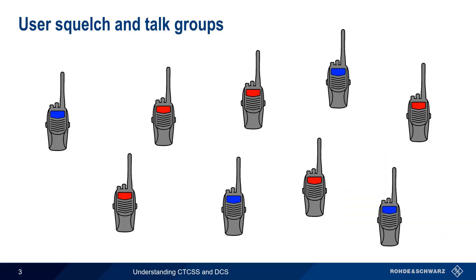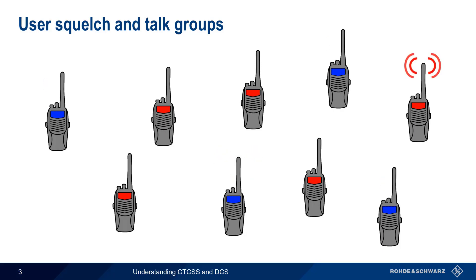Let's look at a couple of examples. Here, some of our radios are configured to use the blue squelch tone or code, and other radios are configured to use the red squelch tone or code. When a blue radio transmits, the other blue radios will open squelch and hear the transmission, whereas the red radios will remain squelched. Similarly, when a red radio transmits, this would only open squelch on the other red radios.